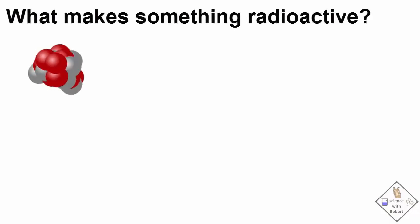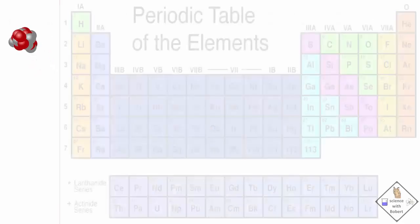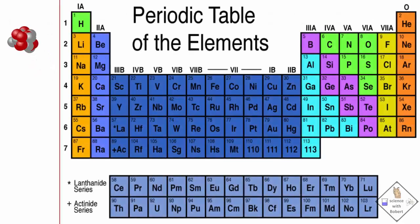What makes something radioactive? Every atom has a nucleus that contains protons and neutrons. Here are all the different types of atoms known to man.